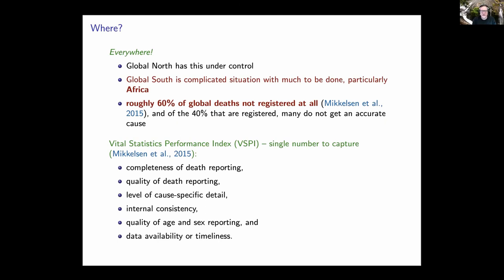Mikkelsen et al. calculated something called the Vital Statistics Performance Index — a single number capturing six dimensions of the overall vital statistics system in a given country. This wraps together completeness of death reporting, quality of that death reporting, level of cause-specific detail, internal consistency of the data produced, quality of age and sex reporting, and data availability and timeliness.